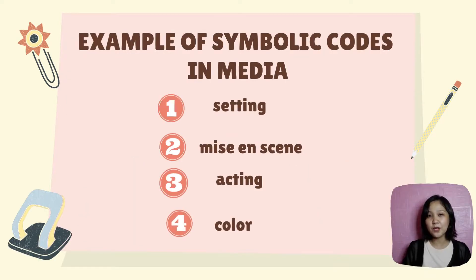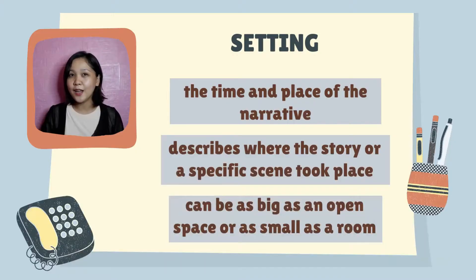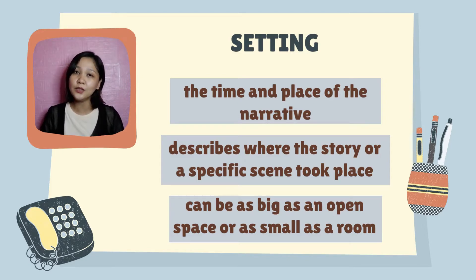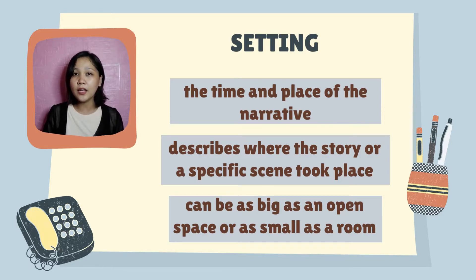Some examples of symbolic codes include setting, mise-en-scene, acting, and color. Setting is known as the time and place of the narrative. It describes where the story or a specific scene took place. It can be as big as an open space or as small as a room, and it can even be a created atmosphere or frame of mind.